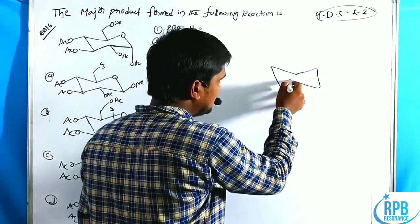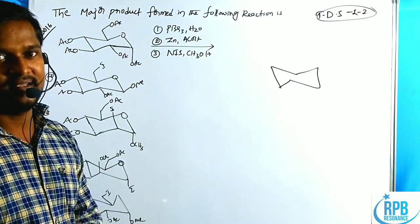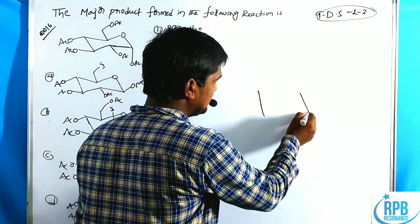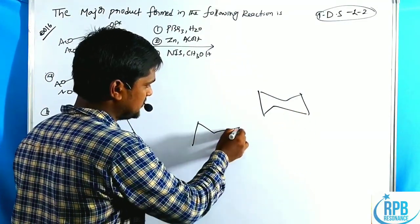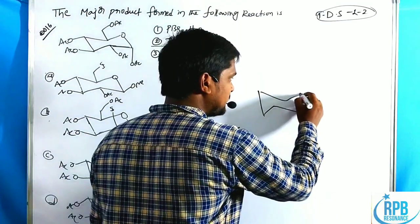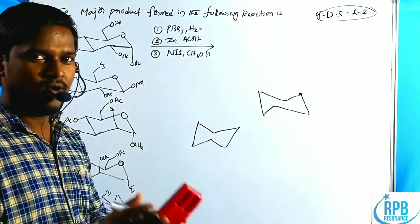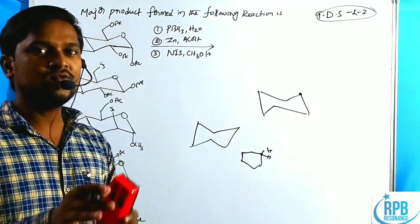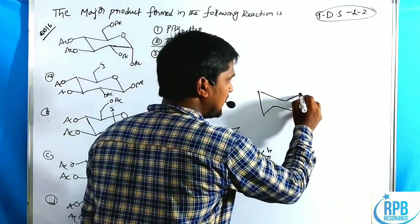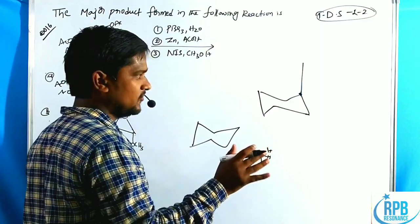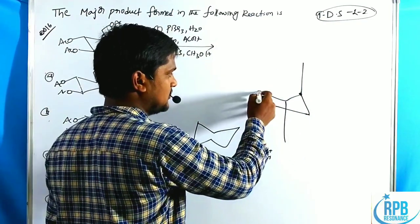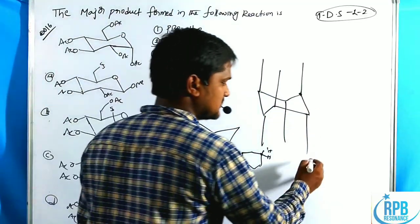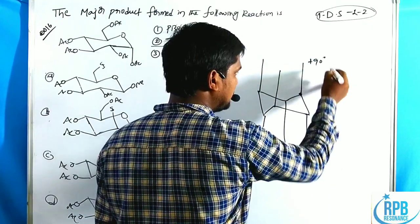We know the concept of chair conformation of cyclohexane. In general, the chair conformation looks like this. At the first position, the carbon has two hydrogens — CH2 — and these two hydrogens have different orientations. One is at +90 degrees and another at -90 degrees, oriented upward and downward alternately.